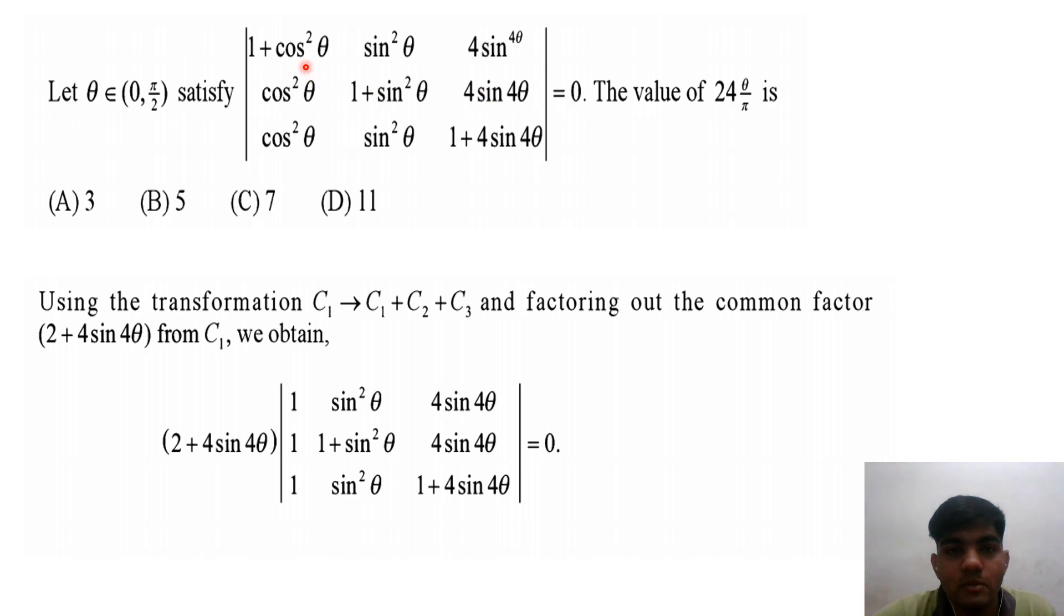When we add C1 + C2 + C3, the first column becomes 2 + 4sin4θ repeated in each row. The factor 2 + 4sin4θ can be taken out, simplifying our determinant.